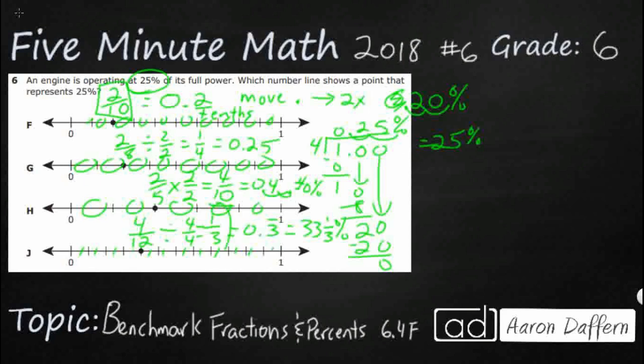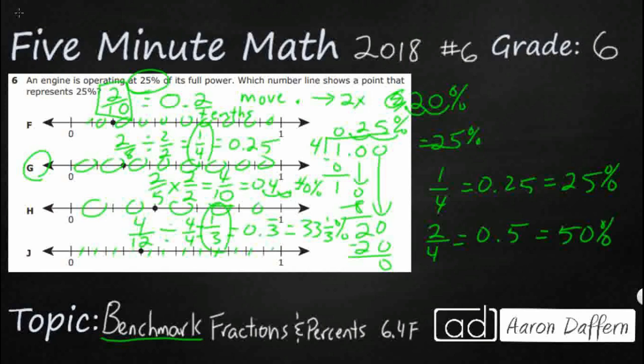Now, this one right here, 1 third. This one right here, 1 fourth. These are benchmark fractions, which means our answer is G, but we should memorize these. 1 fourth equals 0.25 equals 25%. Rather than working that out, we need to just memorize that, just like we memorize our multiplication facts. 2 fourths is the same as 0.5 is the same as 50%. 3 fourths, or 3 quarters. Fourths are called quarters. Think of 75 cents, 75%, 0.75.